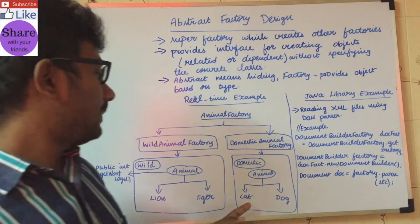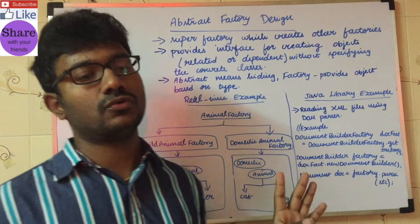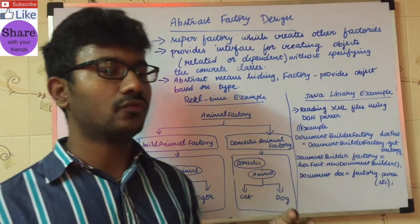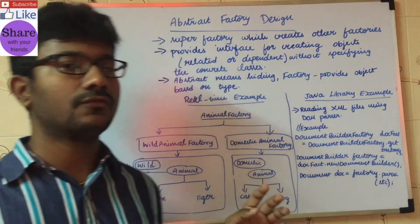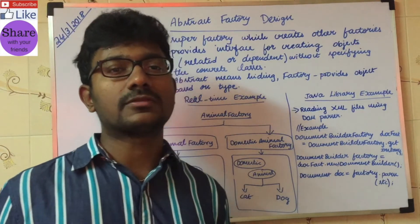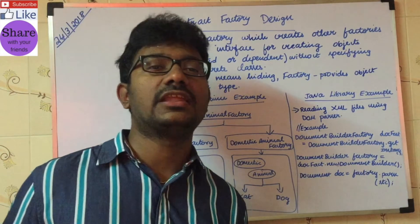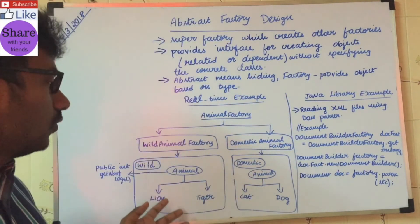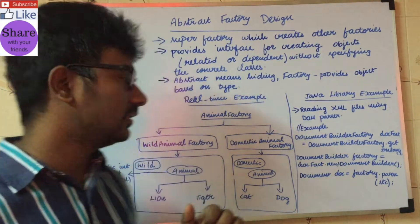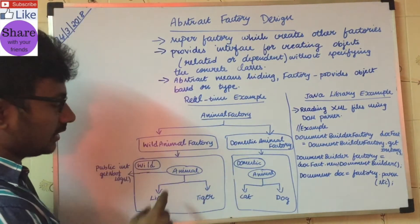In the Cat class, you will find the number of legs — it will return four. Dog and tiger are also four legs. Some other animals may have two legs, three legs, or five legs. This is the technical and concrete class structure.